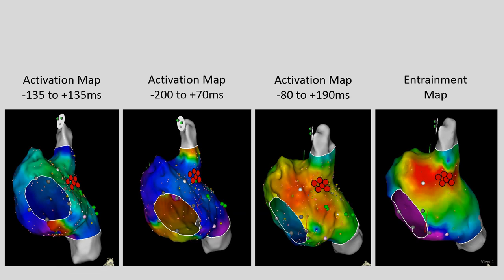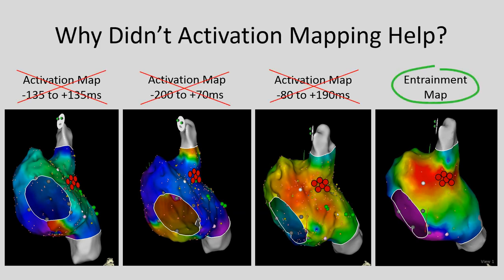Here I put the three activation maps alongside the entrainment map so you can easily compare them. Notice how the ablation lesions on the first three maps are really not near the red earliest spot, regardless of which window was selected. But the entrainment map showed us exactly where we needed to ablate in order to effectively terminate the tachycardia. The question remains: why did these activation maps not lead us to the conclusion needed to guide the ablation strategy? And thus was born this talk.